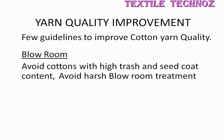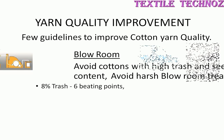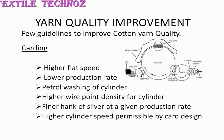In blow room, avoid cotton with high trash and seed coat content. Avoid harsh blow room treatment. For 8% trash, 6 beating points are required. For 5% trash and micronaire 4, 5 beating points are required. For 5% trash and micronaire 3.5, 3 beating points are required. Trash at 3% and micronaire above 4, 3 beating points are required. Trash at 3% and micronaire 3.5, 2.5 beating points are required. And for 2% trash, 2 beating points are required.